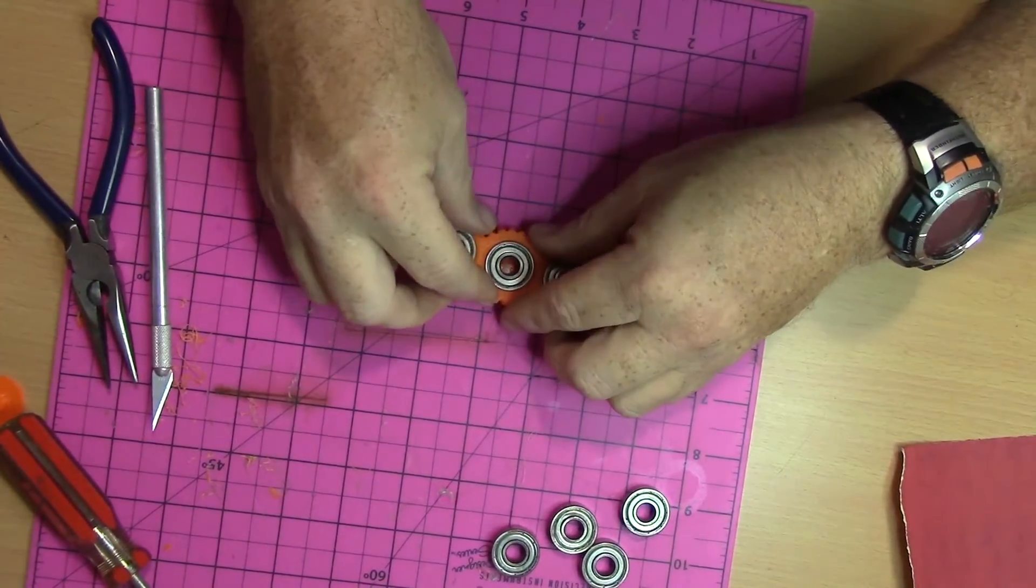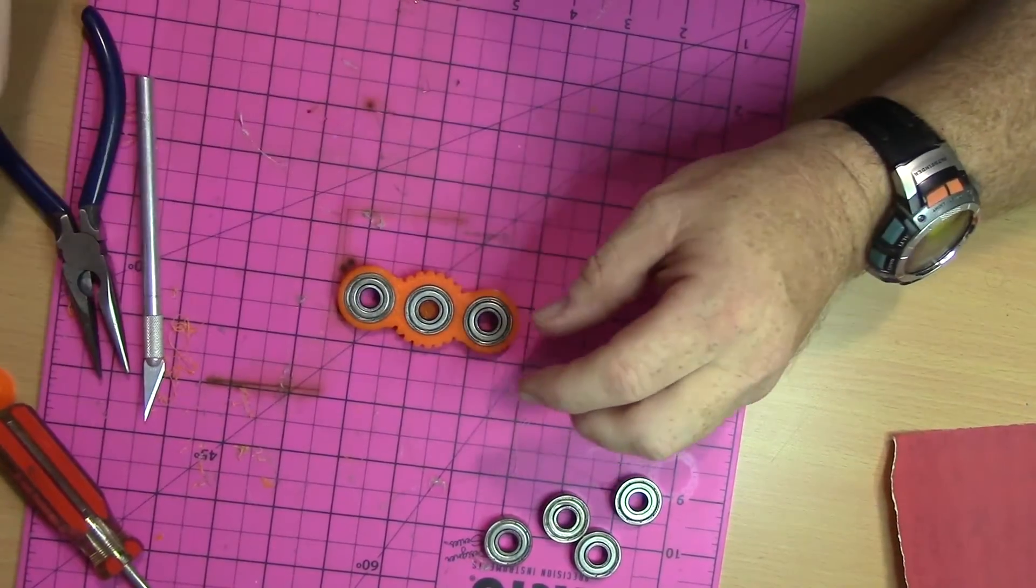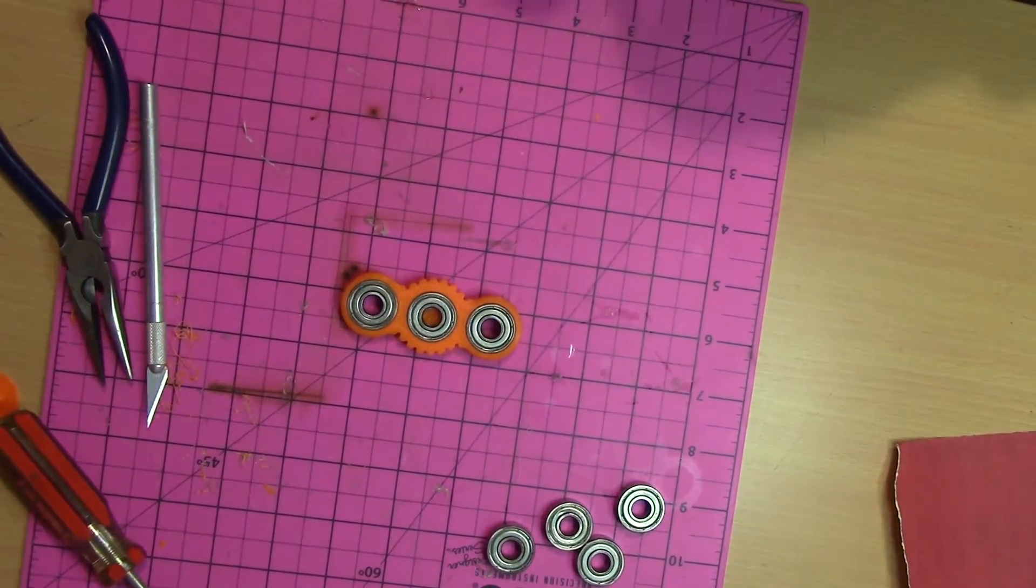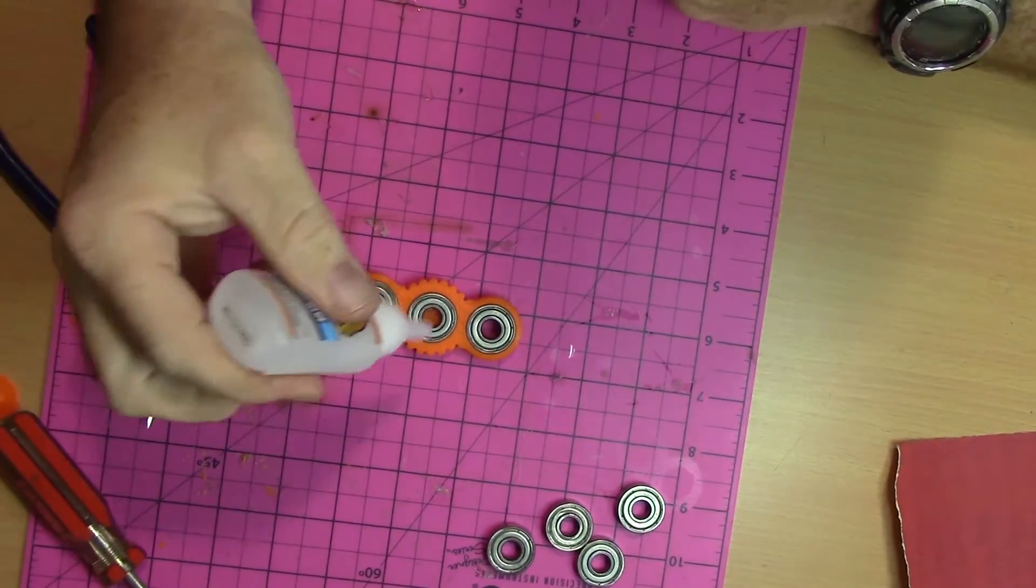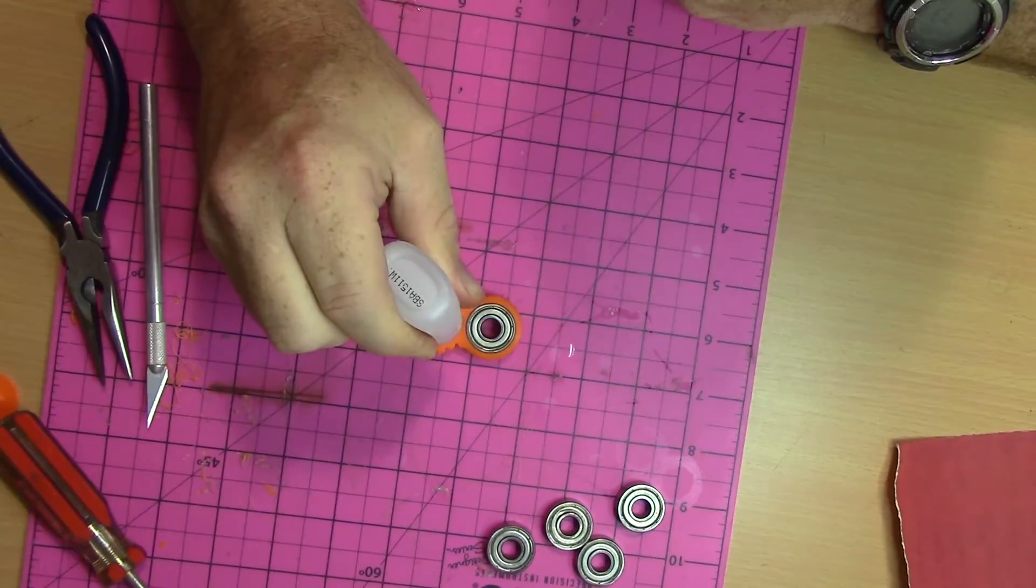With the glue dry, I placed the cap on the board and then the bearing over top of it. I took a little bit of glue and glued the inside of the bearing, once again making sure not to interfere with the bearing's workings.